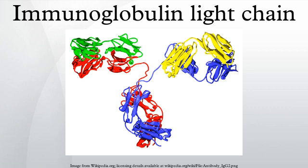Both the kappa and the lambda chains can increase proportionately, maintaining a normal ratio. This is usually indicative of something other than a blood cell dyscrasia, such as kidney disease.